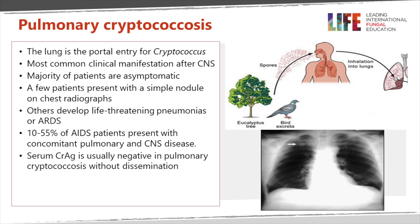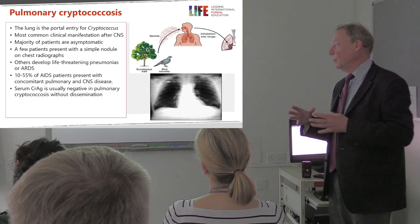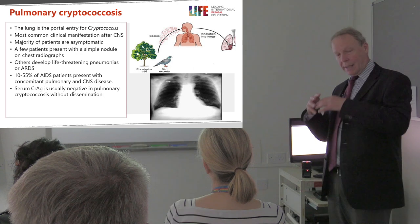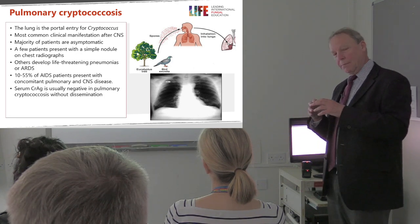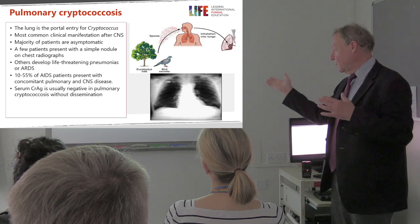Sometimes it goes on and causes pulmonary infection. You can see an example here on this chest X-ray with a large nodule or mass in the right apex. That's the commonest presentation in the lungs — a simple nodule. But you can have bilateral disease and cavitating nodules as well, particularly in patients who are somewhat immunocompromised.